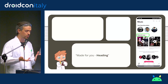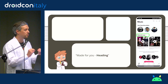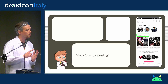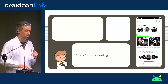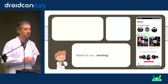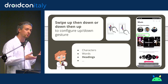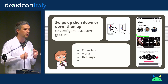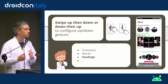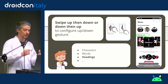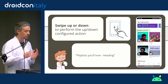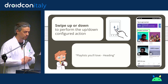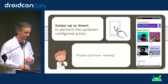TalkBack says 'Made for you, heading,' so it knows this focusable element is a header. I can navigate by headings using a swipe up or down. To configure this, I enter TalkBack's configuration menu and set swipe up/down to navigate to the next heading. So when I swipe down, I go to the next heading and it says 'Playlist you will love, heading.'